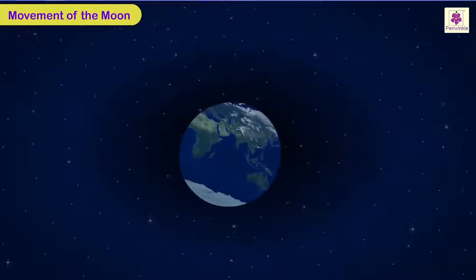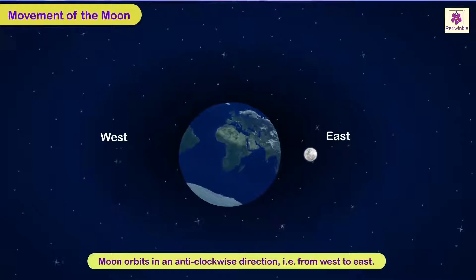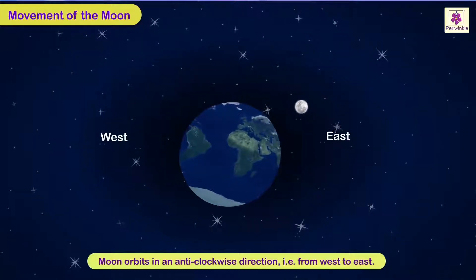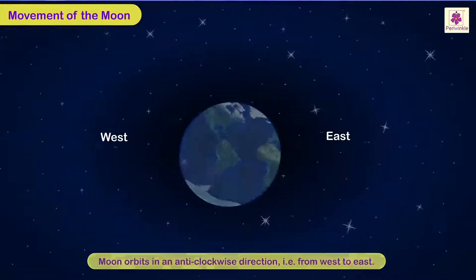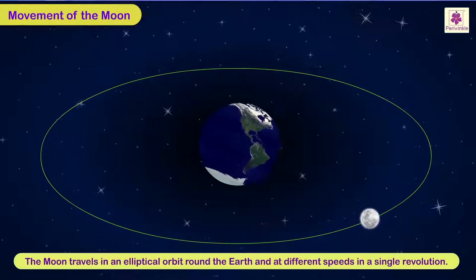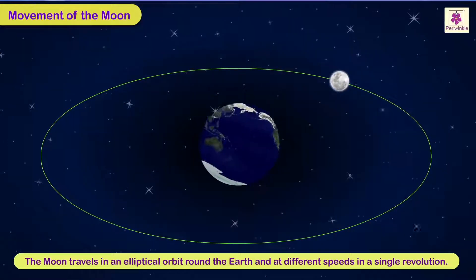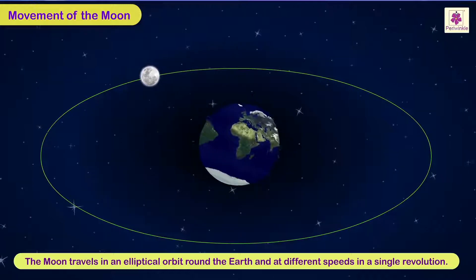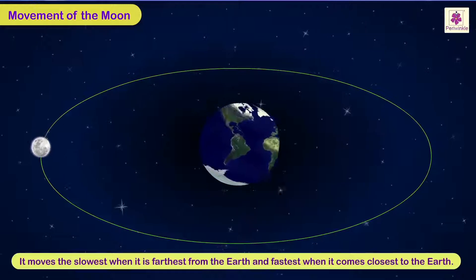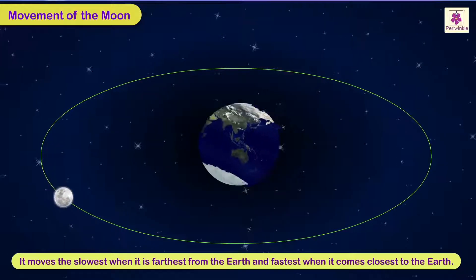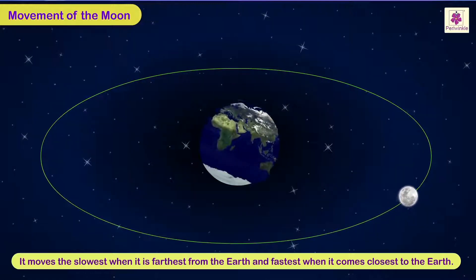The Moon orbits in an anti-clockwise direction, that is from west to east. The Moon travels in an elliptical orbit round the Earth and at different speeds in a single revolution. It moves the slowest when it is farthest from the Earth and fastest when it comes closest to the Earth.